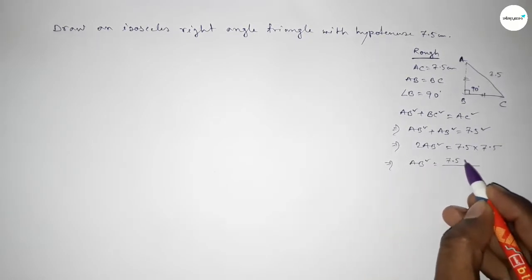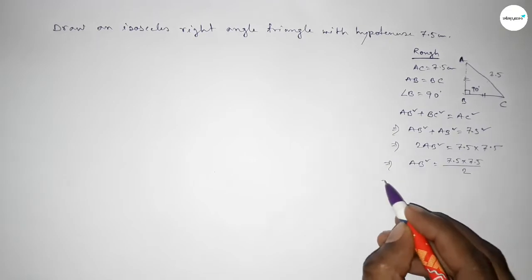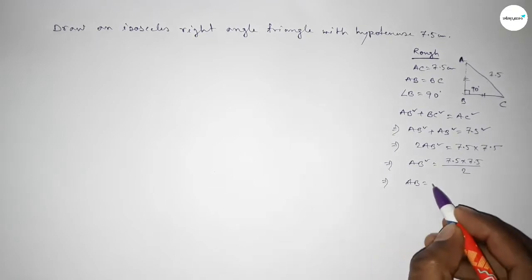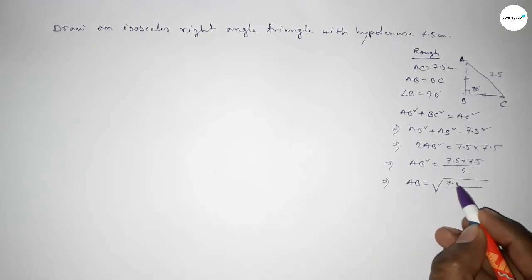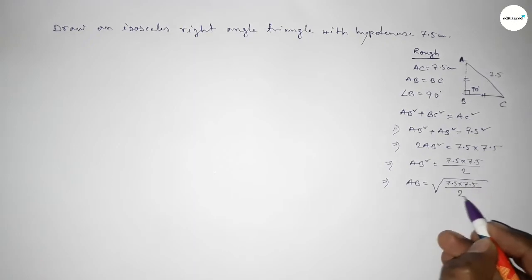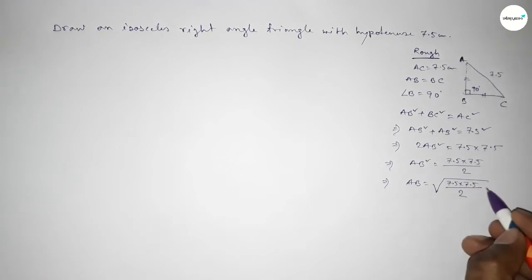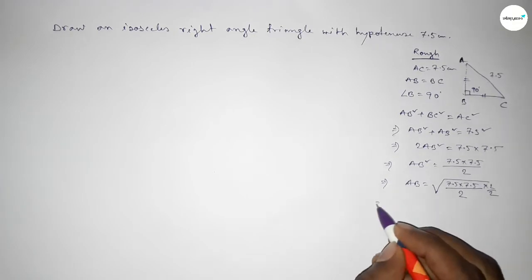This implies that AB squared equal to 7.5 into 7.5 over 2. This implies that AB equal to square root of 7.5 into 7.5 over 2. Now we have to remove the square root from 2, so multiplying by root 2 over root 2.